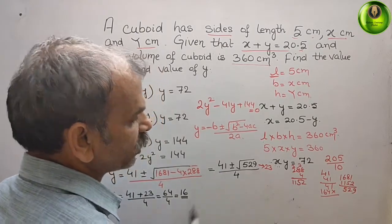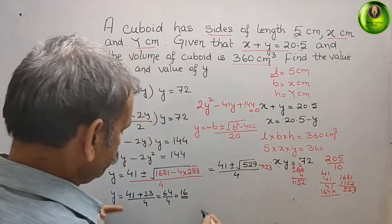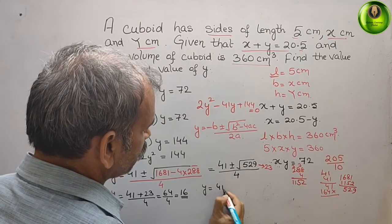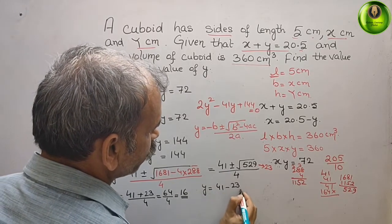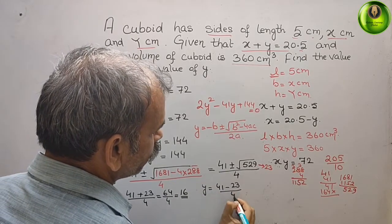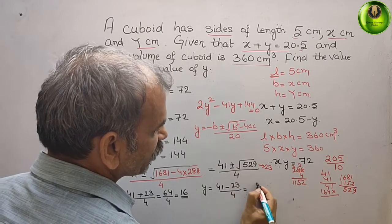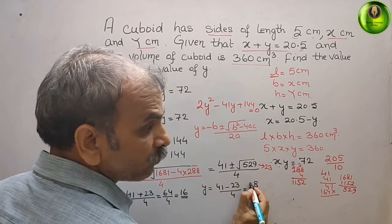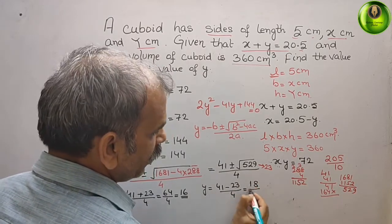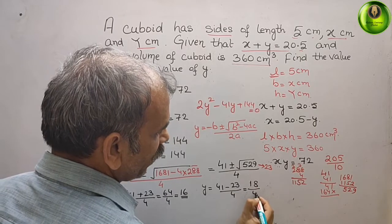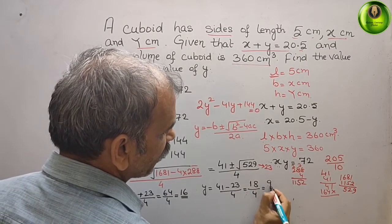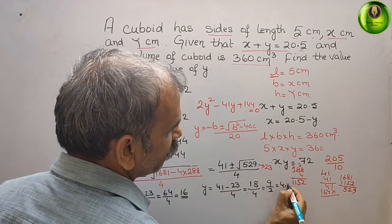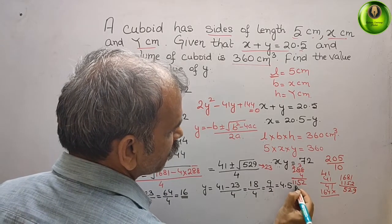Taking the minus case: y equals 41 minus 23 divided by 4, which is 18 divided by 4, giving y equals 4.5 centimeters. So we have two values of y: 16 and 4.5.